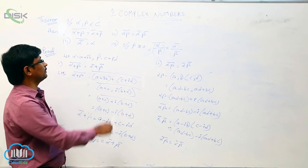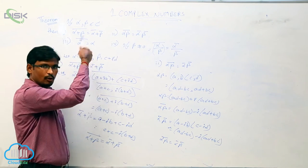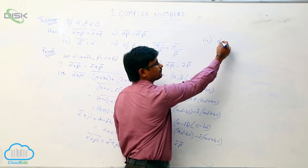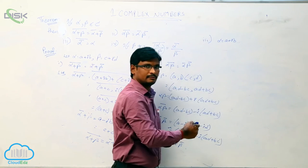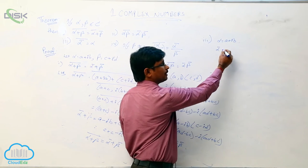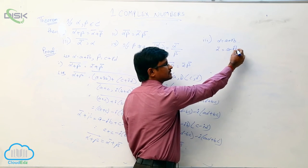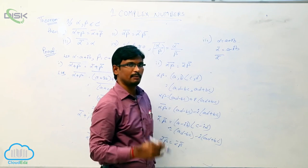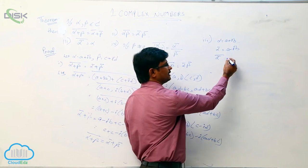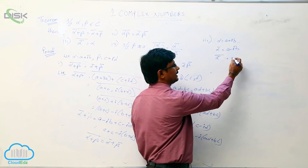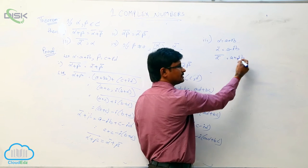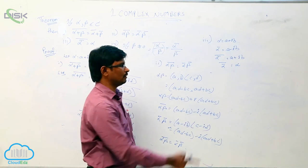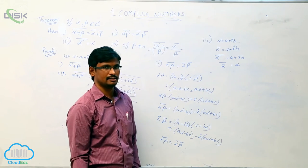Third property: the conjugate of alpha conjugate equals alpha. Alpha is A plus iB, so alpha complement is A minus iB. Finding the complement of that again: the opposite sign gives A plus iB, which is nothing but alpha. So alpha complement, whole complement, equals alpha. This is the third property.